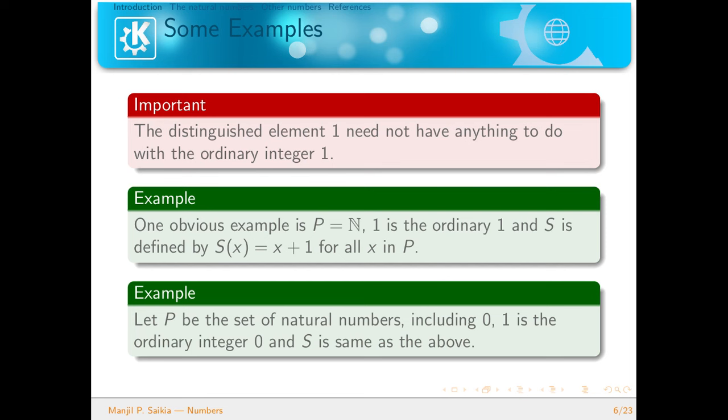The second example is the set of natural numbers including 0. Some people call this the set of whole numbers. Here, the distinguished element 1 will be the ordinary integer 0, and S is the same successor function as before. These are two obvious examples of a Peano system, but we can have more complicated examples.